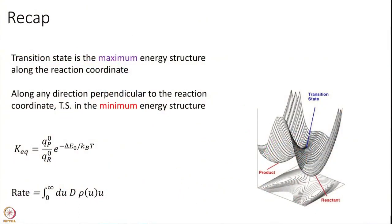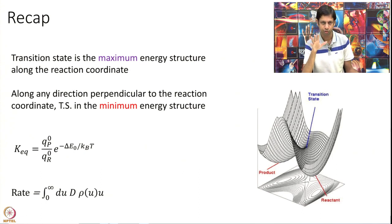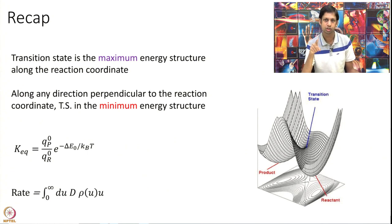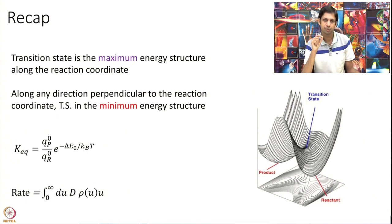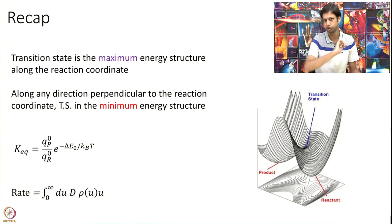Just a quick recap of the essence of several modules. First, what is a transition state? The transition state is the maximum energy structure along the reaction coordinate. The reaction coordinate is the minimum energy path joining reactants and products. Going from reactant to product in the minimum energy fashion, the maximum energy point along this path is called the transition state.